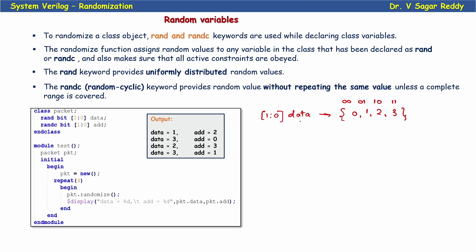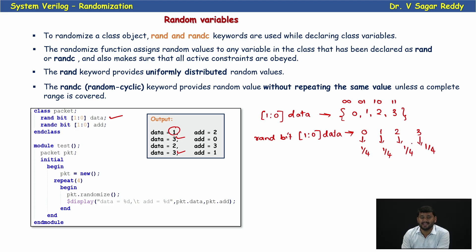If I declare this data variable as rand — for example, rand bit [1:0] data — then for each randomization call, the values 0, 1, 2, and 3 each have equal probability of 1 in 4. For each randomization call, I'll get any value out of these four. So in the fourth call, 3 can repeat because each element has equal probability on every randomization call.